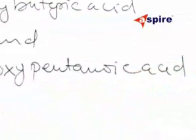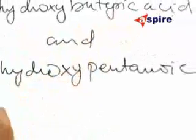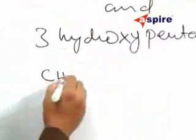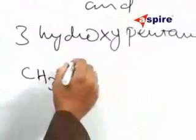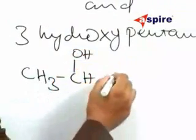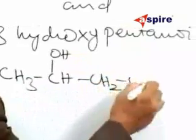We will write down the structures of these two compounds. The first one will be CH3CHOHCH2COOH.